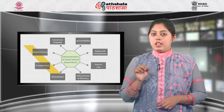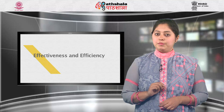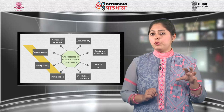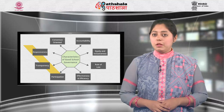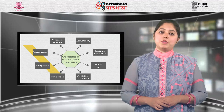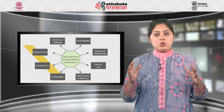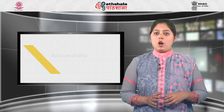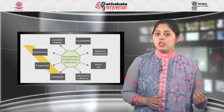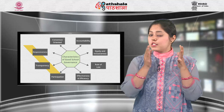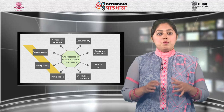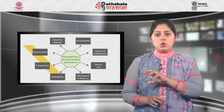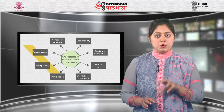The seventh characteristic is effectiveness and efficiency. The concept of efficiency in the context of good school governance also covers the sustainable use of resources and the protection of the environment. The eighth is accountability — that is, an organization or institution is accountable to those who will be affected by its decisions or actions. Students, if you want to assess the governance of any school, do check all these features.